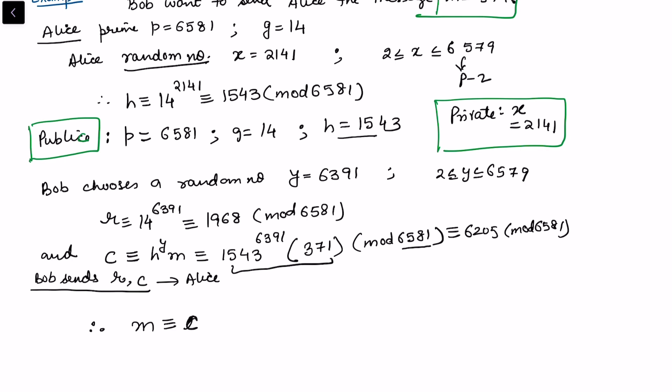m = c * r^(-x) mod p. So c is given by Bob: 6205. r is also given by Bob: 1968. And x is already available with Alice, so that is -2141.